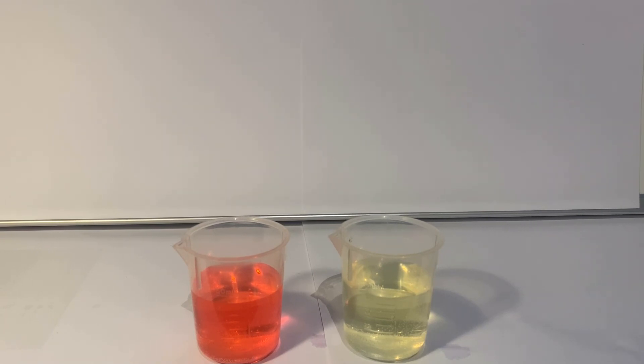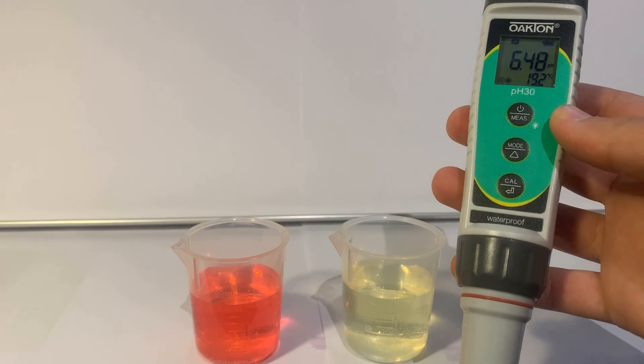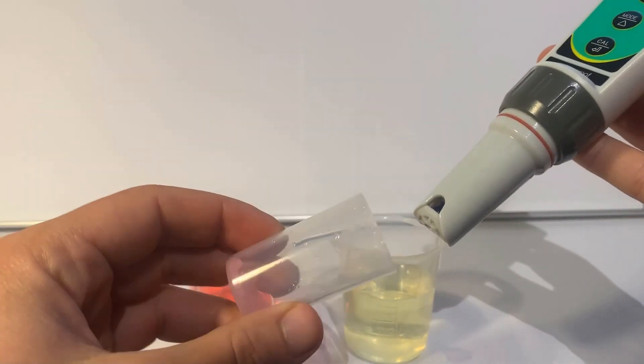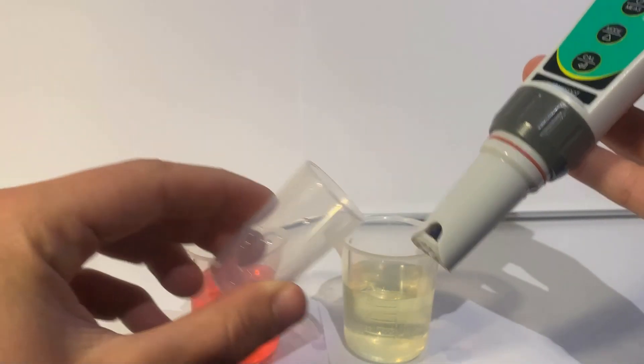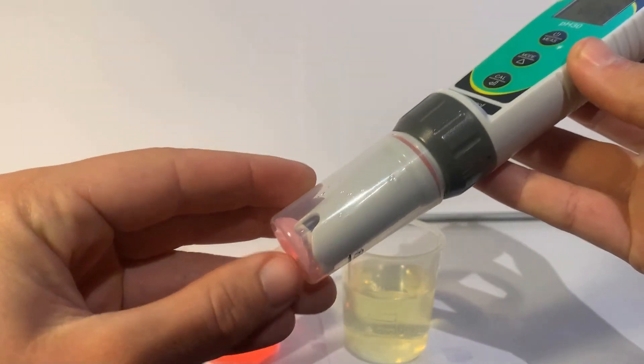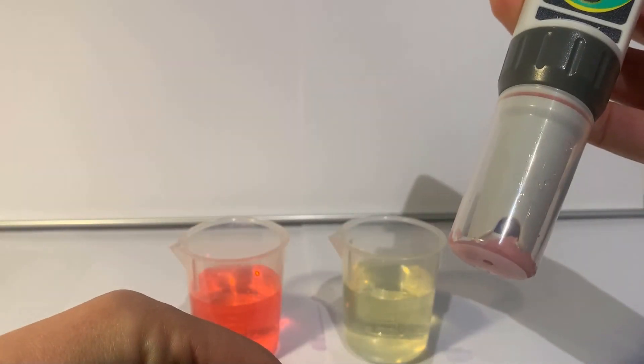Store your meter using either electrode storage solution if it's part of your monitoring kit, or pour a small amount of buffer 4 solution onto a small piece of paper towel to be stored at the bottom of your cap.